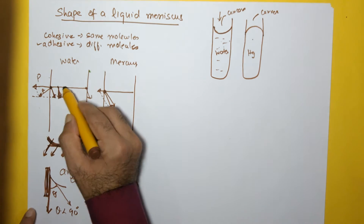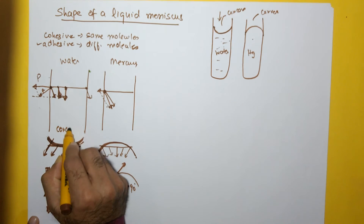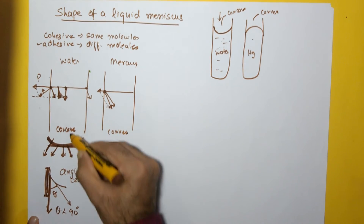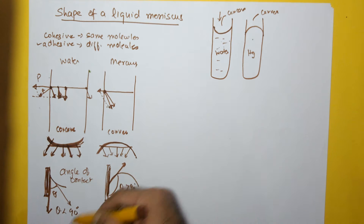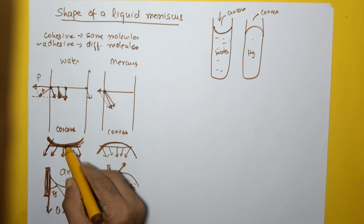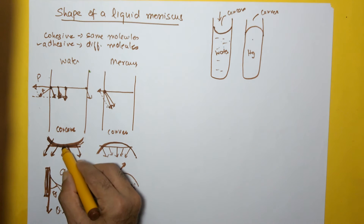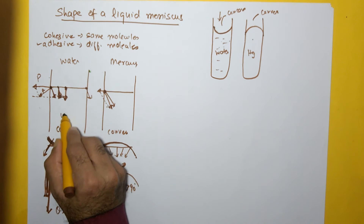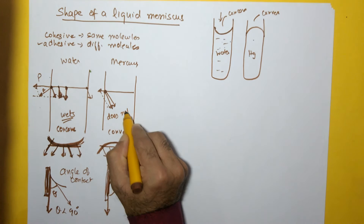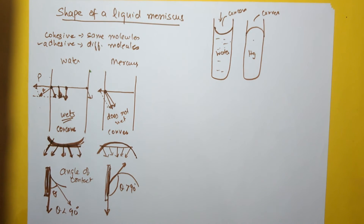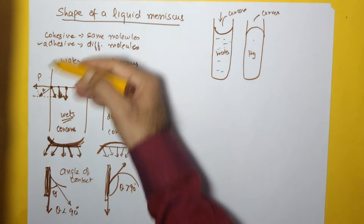So when we have a concave meniscus, the angle of contact is less than 90 degrees, and when we have a convex meniscus, the angle of contact is greater than 90 degrees. There is one more aspect: when the angle is less than 90 degrees and we have a concave meniscus, the liquid wets the solid. When the angle is greater than 90 degrees, the liquid does not wet the solid. For example, water poured on a glass plate will wet it, but mercury poured on a glass plate will not. This is the concept of angle of contact associated with surface tension.